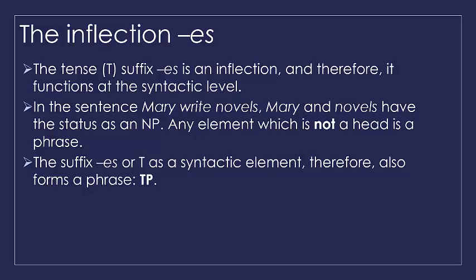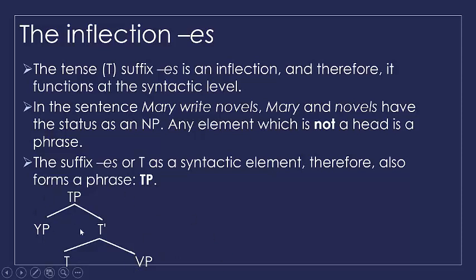If we have tense or T as the head, then we have TP. This is the structure of TP — the tense phrase — which branches into a YP specifier and a T-bar. The T-bar branches into T and VP. So this is the basic structure of a phrase: we have a maximum projection, a specifier which can be on the left or on the right, then the T-bar, and then the head. In this case, if T is the head, it has a VP as its complement.